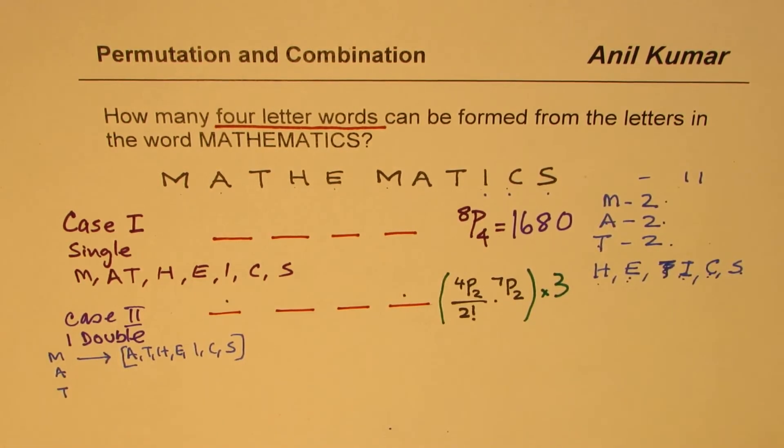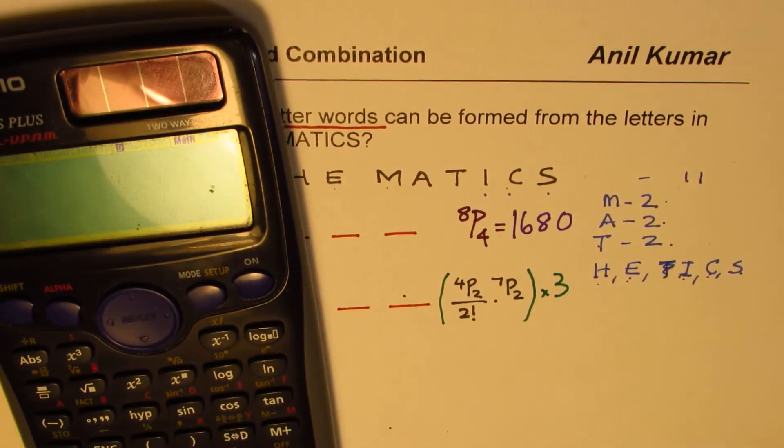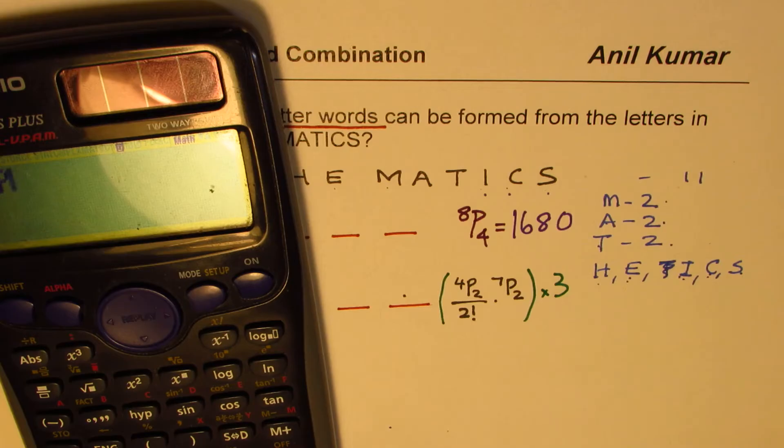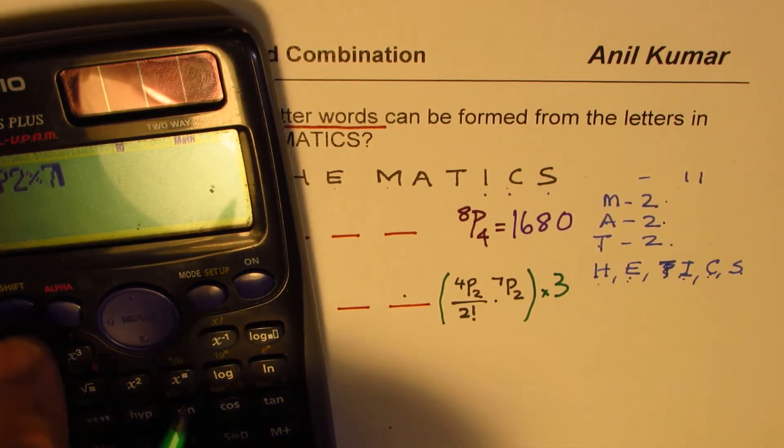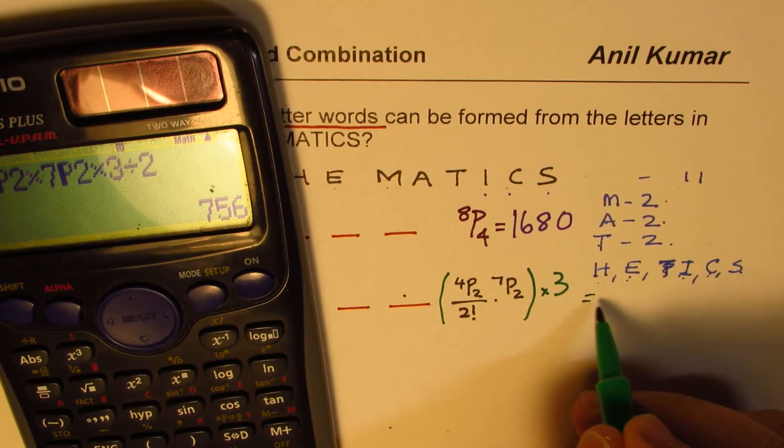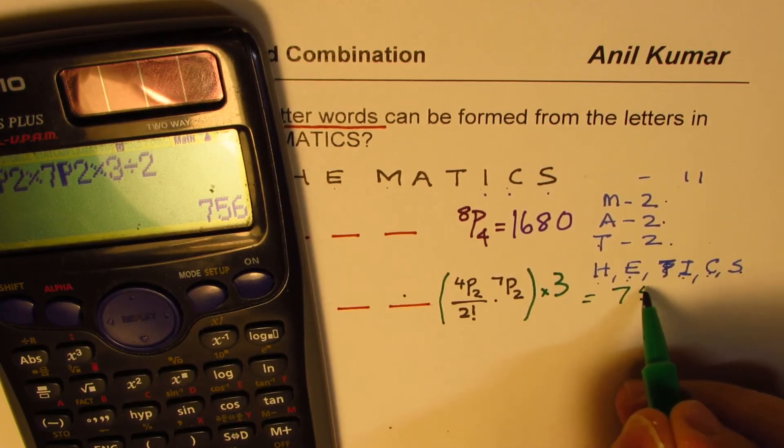And all this can be done with M, A or T. So we have three of these. So we could do the same process with M's, we could do the same thing with A's and with T's. So we'll multiply this by three. So we get these many combinations. Perfect. So that gives you the number as 4P2 times 7P2 times three divided by two. So that gives you a number as seven hundred fifty six.